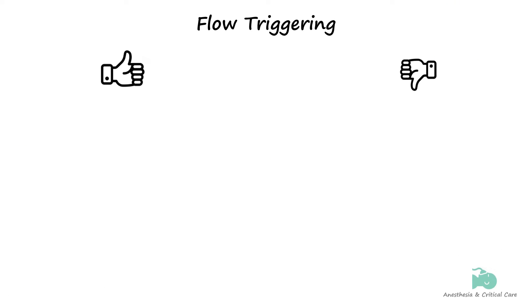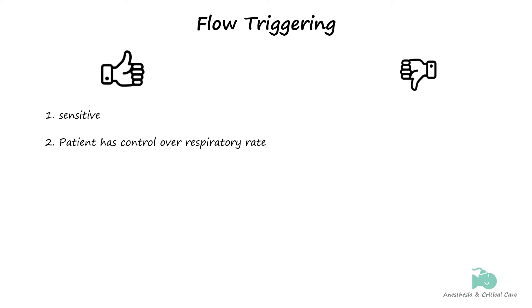Flow triggering is the most used triggering method for many reasons. It is quite sensitive — little patient effort is required to trigger a mechanical breath, so the patient's work of breathing is not wasted on triggering the ventilator. It allows the patient to have control over their minute volume as the patient decides the rate of respiration, which prevents dyssynchrony. It is more comfortable due to decreased work of breathing in triggering, increased control over ventilation, less delay in initiation, and it permits a lower level of sedation.